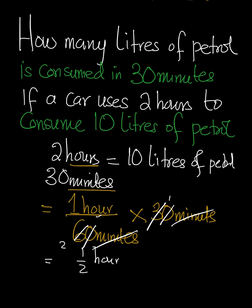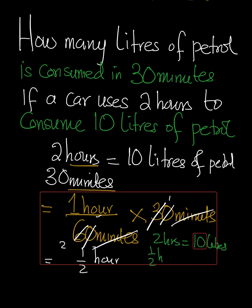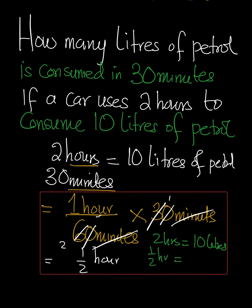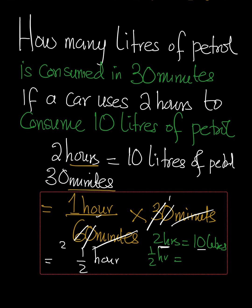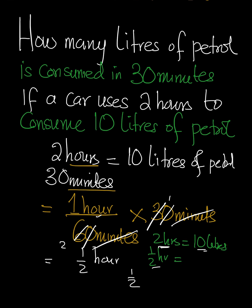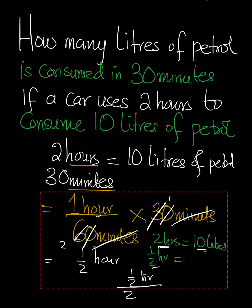Now we can do a comparison: two hours is equal to 10 liters. How much will we get for half an hour? Two hours is a lot — it gives us 10 liters. So half an hour should give us fewer liters. Since we need fewer, more time goes in the denominator. So we calculate: half hour divided by two hours, multiplied by 10 liters.